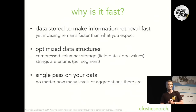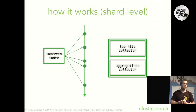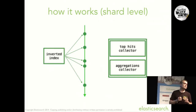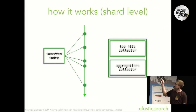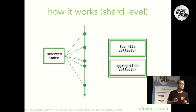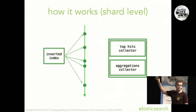One last reason aggregations are fast is that no matter how many levels of aggregations you have, everything is computed in a single pass. When you run a query with Elasticsearch, the inverted index identifies matching documents and enumerates them. You can attach listeners called collectors to this iteration. By default you always have the top hits collector, but you can also plug in a collector for aggregations. Computing aggregations and computing top hits happens at the same time in the same collection pass.